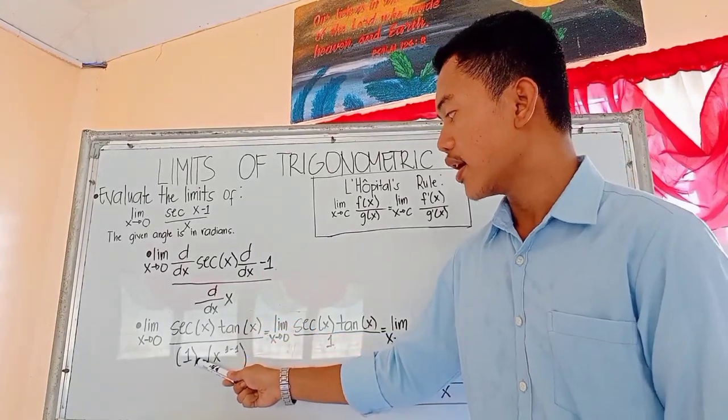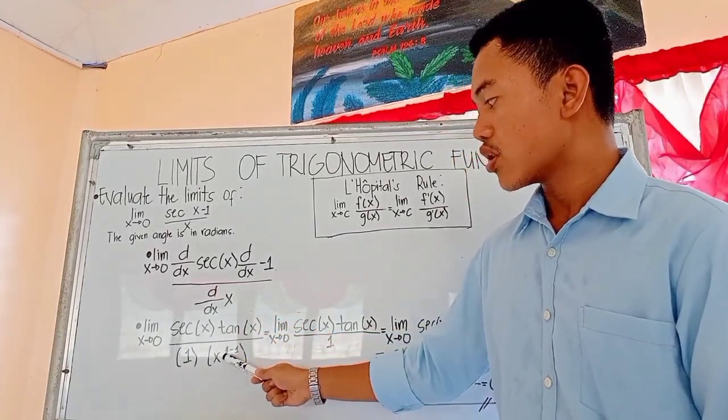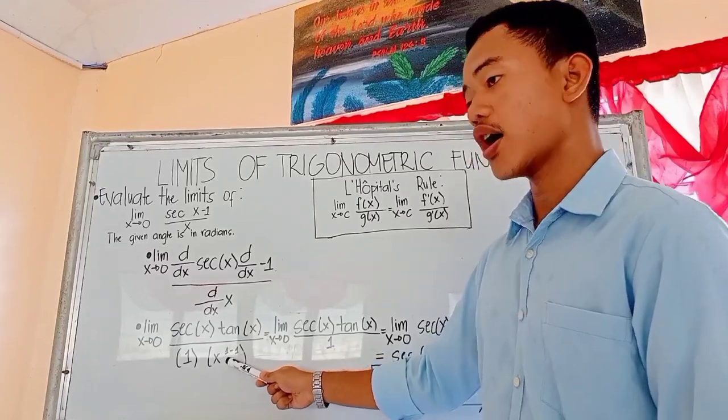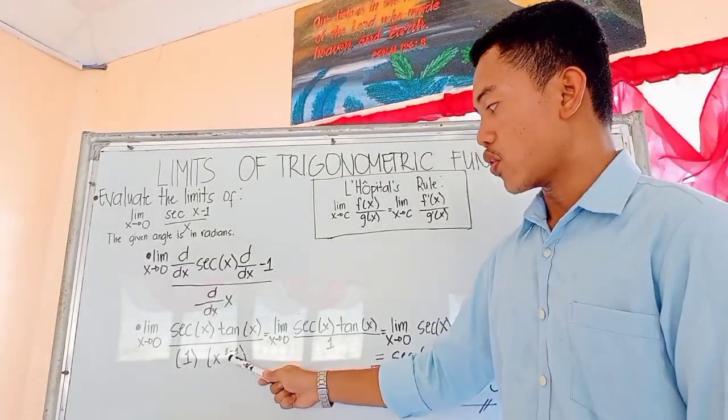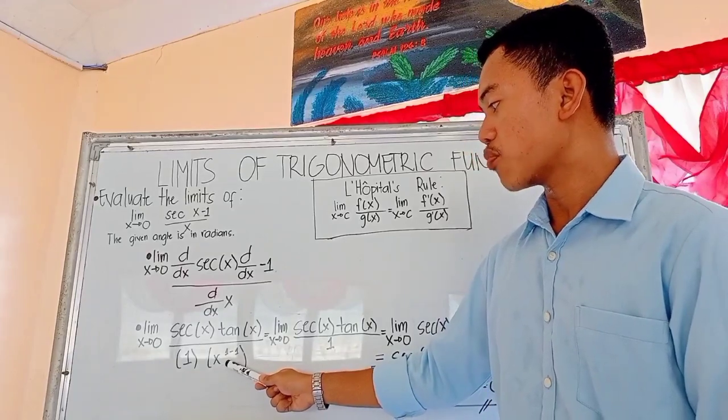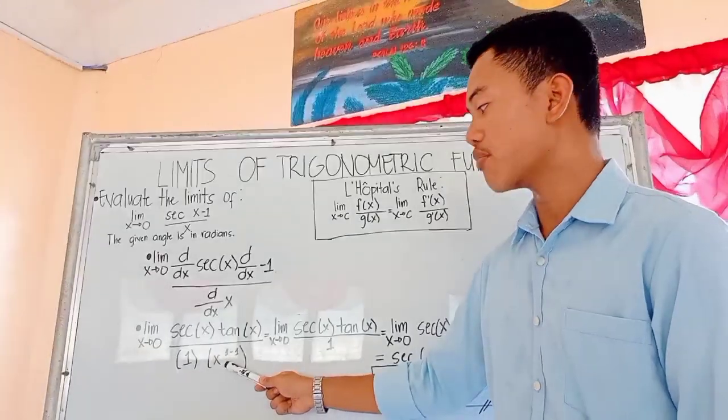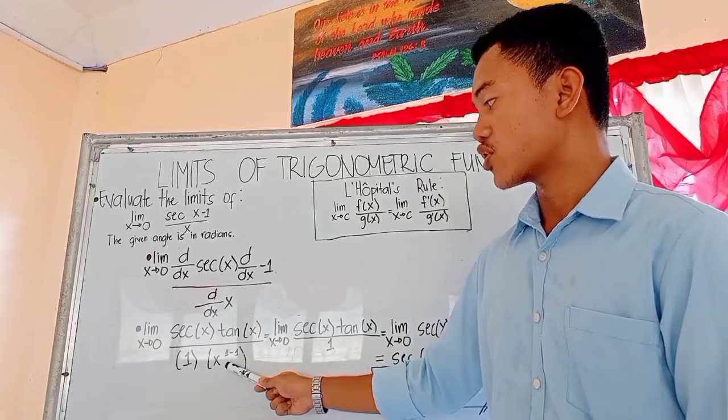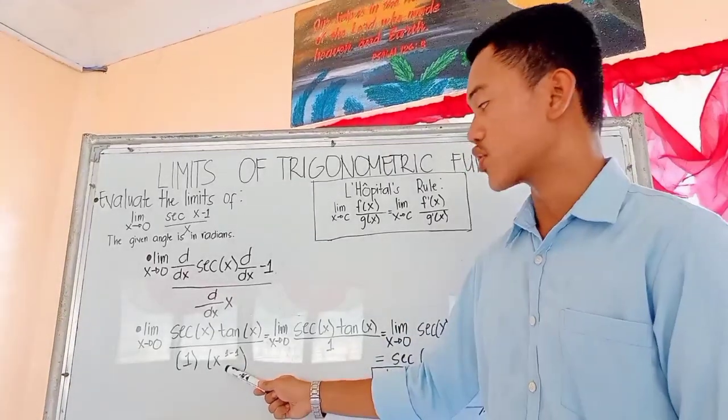All over the derivative of x using the derivative of a power. x here has an exponent of 1, so we copy 1 here. And x raises to the power of 1 minus 1, so x raises to the power of 0. So according also to the 0 property of exponents, any number raised to the power of 0 equals 1. So 1 times 1 equals 1.